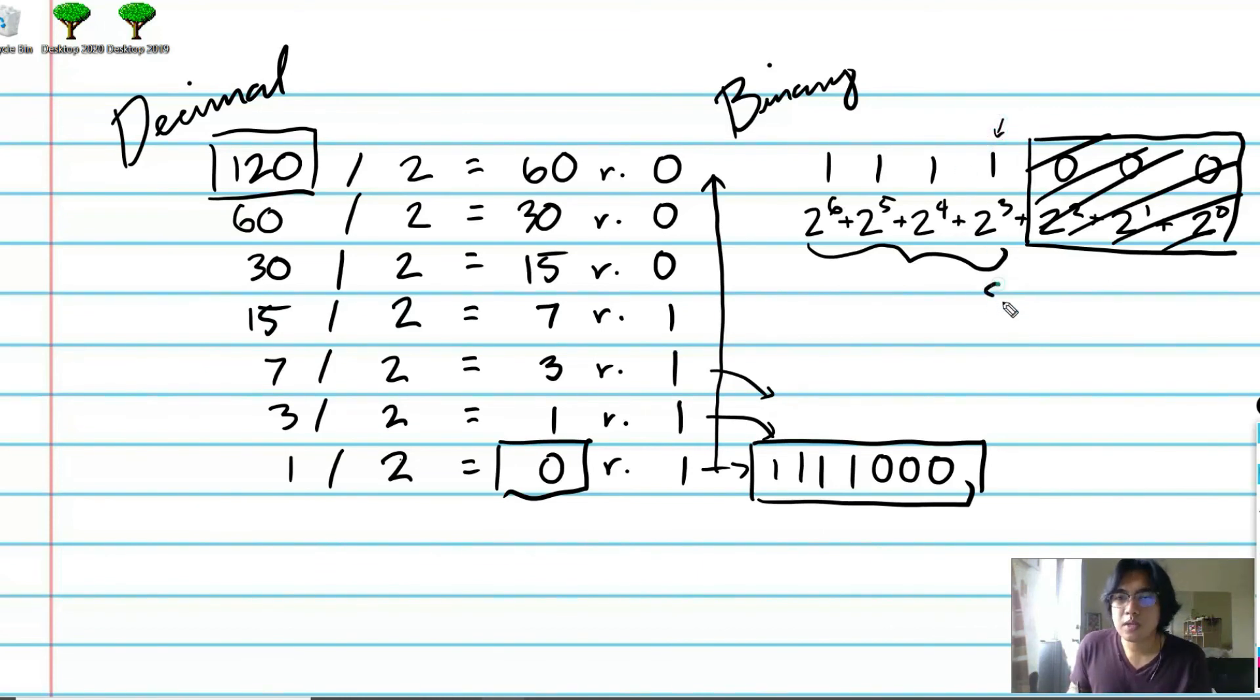So this should be 8, 16, 32, and 64. We add these values together and we get 120.